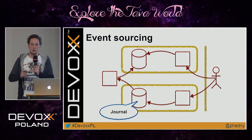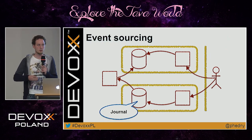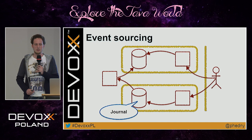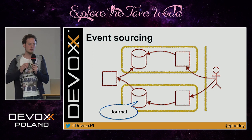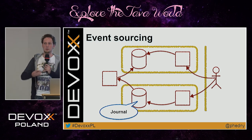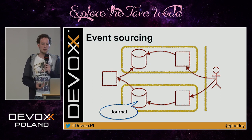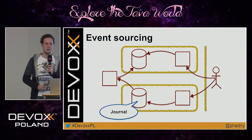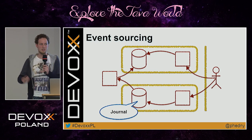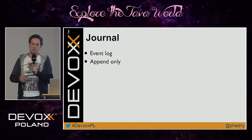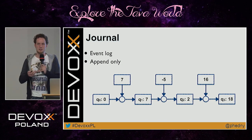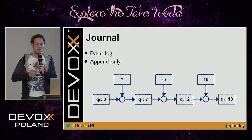If the write-side database is just a journal — append-only, where you add commands at the end and never change anything before — then what you've created is event sourcing. The interesting thing about event sourcing is that if you want to rebuild the read-side database, you simply read the journal from the beginning, run it through the transformation service, and you arrive at the same state. This journal is an event log that is append-only.